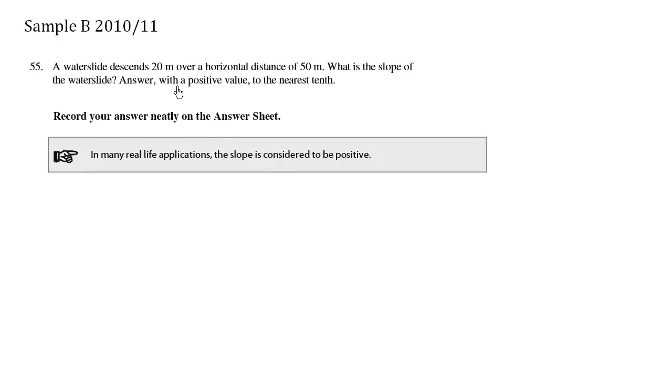A water slide descends 20 meters over a horizontal distance of 50 meters. What is the slope of the water slide? Answer with a positive value to the nearest tenth.